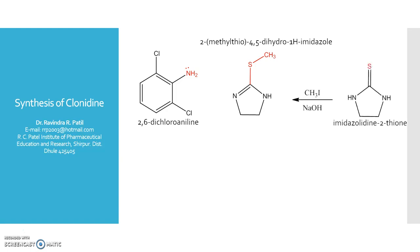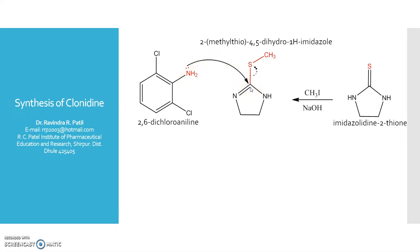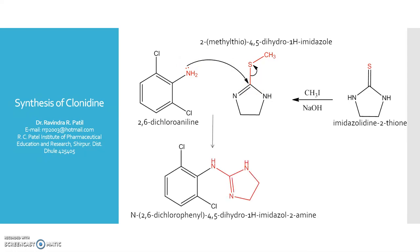This intermediate is obtained from imidazolidine-2-thione, which upon methylation with methyl iodide gives 2-methylthio-imidazoline. The electron-rich amine group will attack on this electron-deficient carbon to give the desired compound, clonidine.